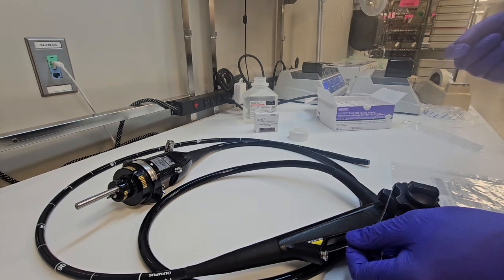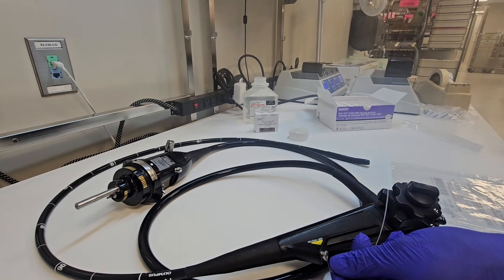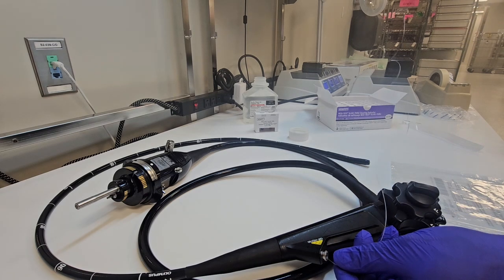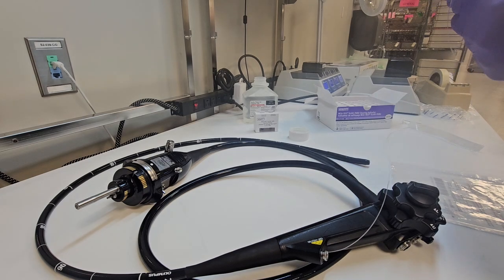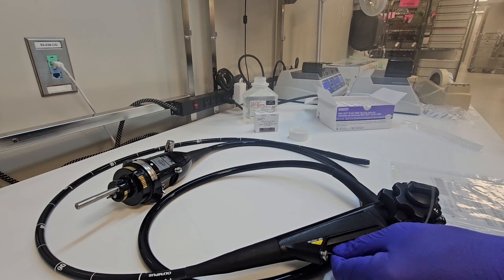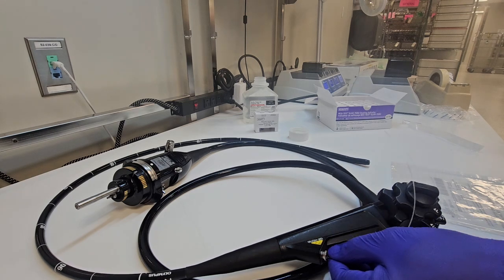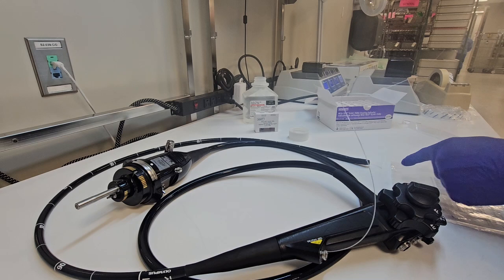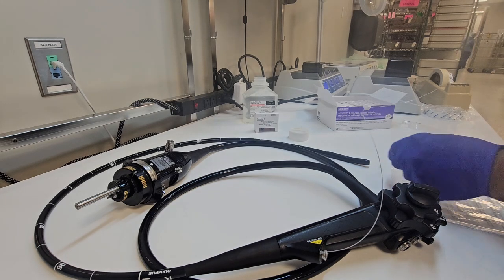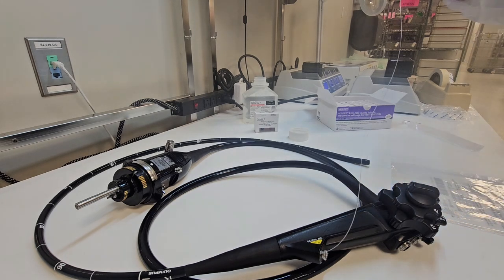This one requires that the distal and proximal end of this squeegee be moistened with water prior to pushing through to help ease the friction. And when you're doing that, you want to make sure you're not hitting any other surfaces and use the water stated by the IFU. You want to advance that brush nice and slow until it exits the distal tip.